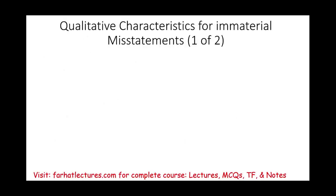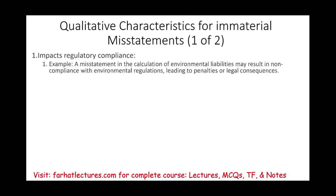It's very important to look at the qualitative characteristic even for an immaterial misstatement. A misstatement could be immaterial numerically, but the question is does it have any impact on regulatory compliance? If it does, then it becomes important — it becomes material in the sense that it's significant. A misstatement in the calculation of environmental liabilities may result in noncompliance with environmental regulations. So it's below the numerical threshold, but it's a serious problem because it involves regulatory compliance.